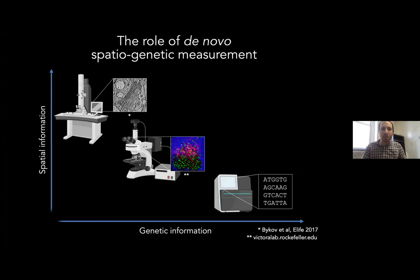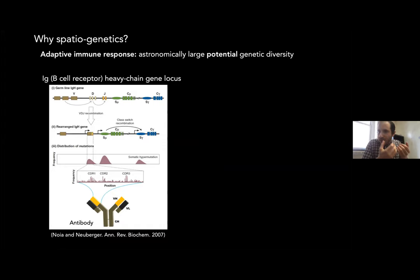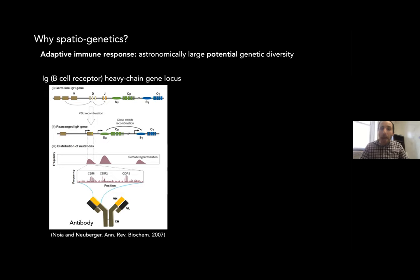It might not be obvious why one would necessarily want to generate a technology capturing both types of information simultaneously. Certainly there are clever ways to perform a spatially detailed measurement on one sample and a genetically detailed measurement on another, and integrate these by interpreting how they correlate. But the problem is that there are real biological systems for which this is simply not sufficient — a great example being the adaptive immune system.